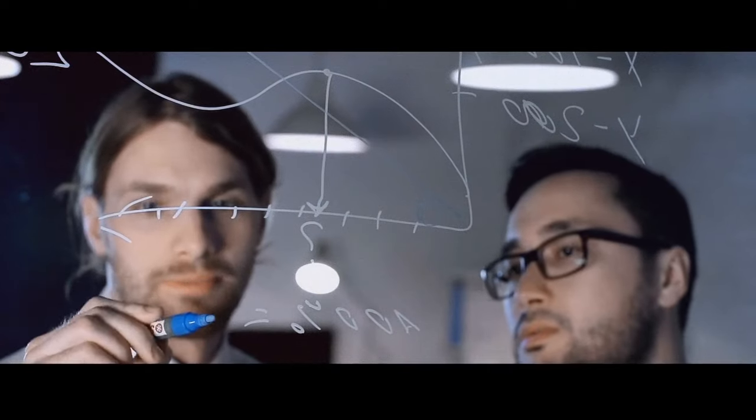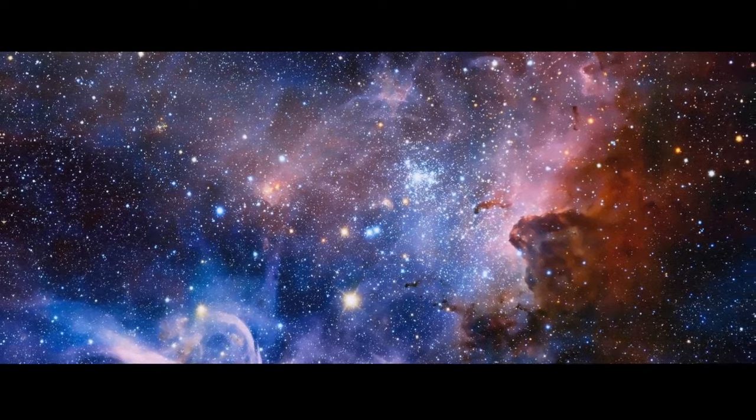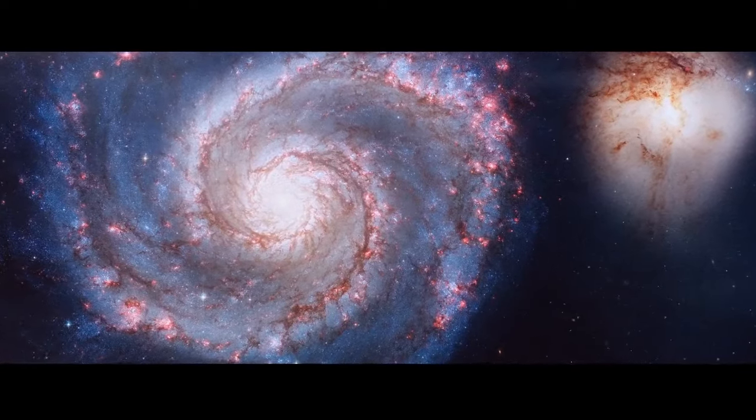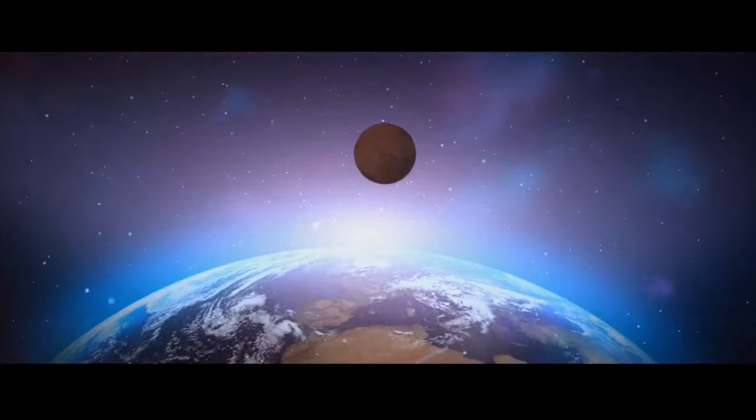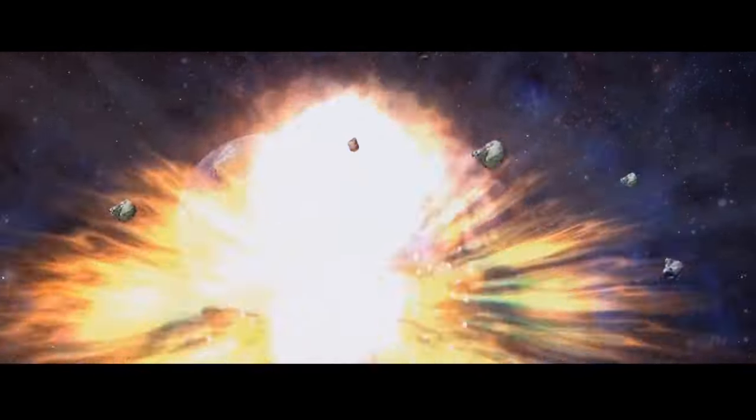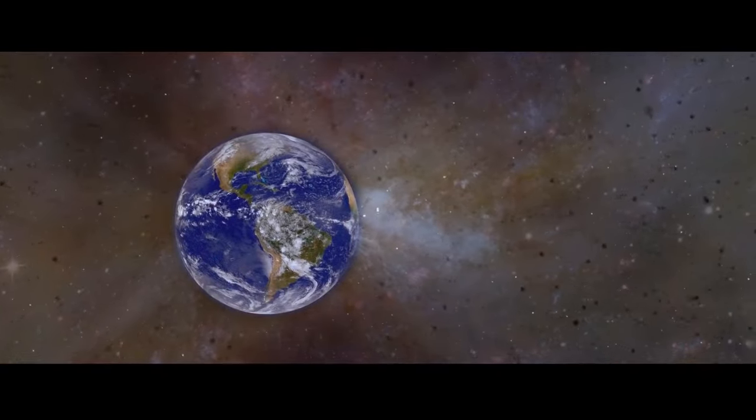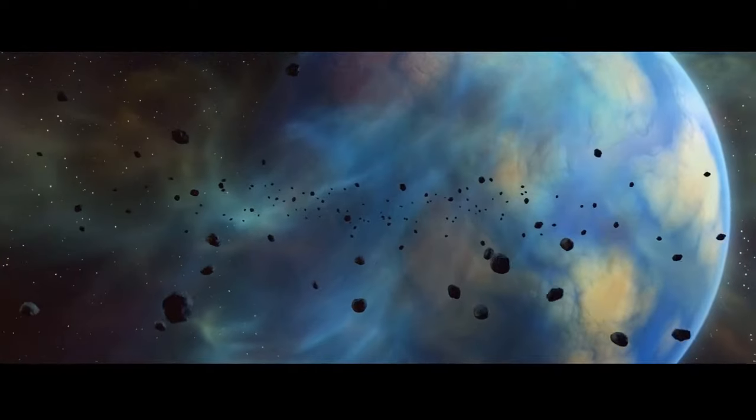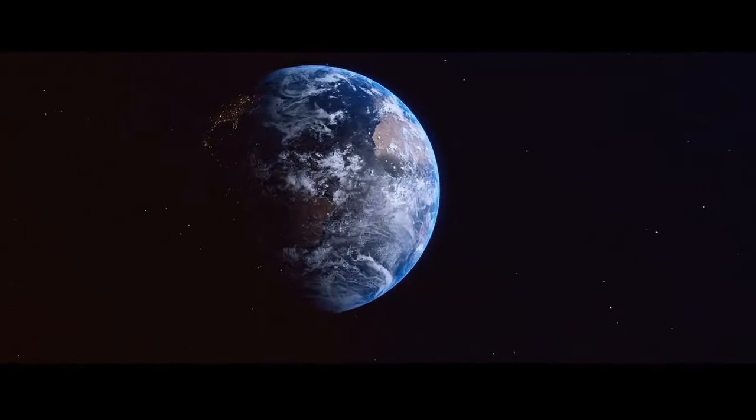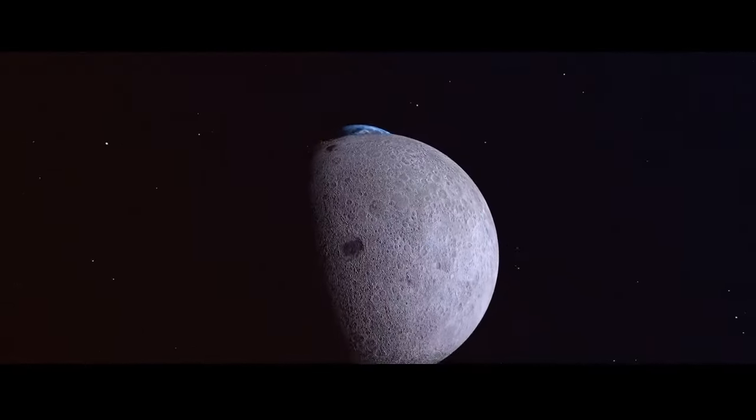But today, the most widely accepted theory goes like this. Once a long, long time ago, but not in a galaxy far, far away, Earth collided with a Mars-sized planet. The debris and clouds of dust from the collision gathered around our planet and started circling it. Eventually, something that we today know as the Moon formed there.